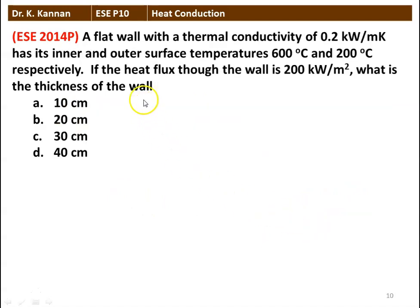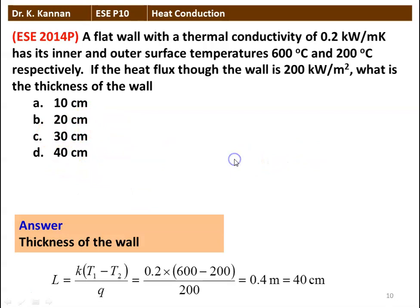Next question: A flat wall with thermal conductivity of 0.2 kW/m·K has inner and outer surface temperatures of 600°C and 200°C respectively. If the heat flux through the wall is 200 kW/m², what is the thickness of the wall? Options: 10 cm, 20 cm, 30 cm, or 40 cm. The thickness L = K × (T1 − T2) / Q = 0.2 × (600 − 200) / 200 = 0.4 m = 40 centimeters. The answer is 40 centimeters.